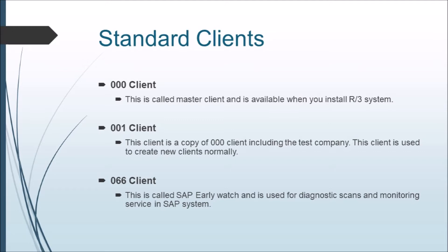Client 001 is a copy of 000 which includes the test company data, and its settings are client independent. Generally, we use the 000 client to create a new client. The other default client is 066, called Early Watch. The SAP Early Watch Alert is a diagnosis service for solution monitoring of SAP and non-SAP systems using Solution Manager. The alerts mainly contain performance issues, average response times, system loads, database administration, etc.